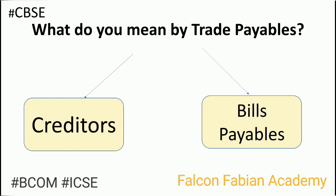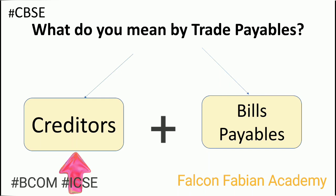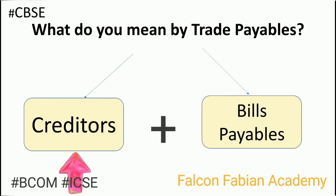So what do you mean by the term trade payables? The term trade payables is a sum of creditors and bills payables. Let's understand both these terms. A creditor is a person, firm, or entity from whom the business has bought goods on credit. The term 'goods' here refers to items that are bought by the business to be sold for the purpose of generating revenue. So buying an asset cannot be referred to as buying goods.